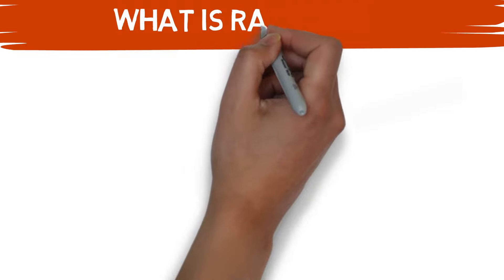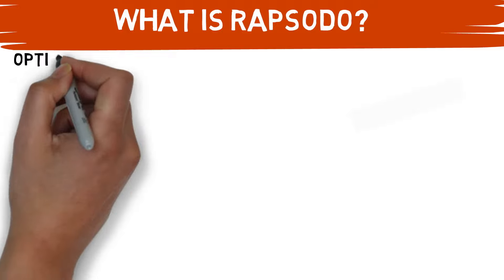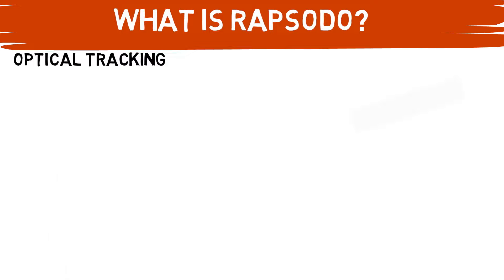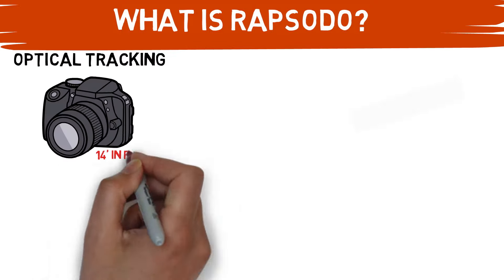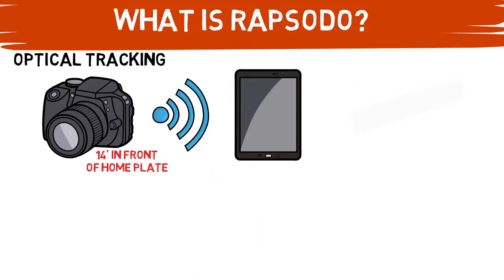So we've talked about Rapsodo a lot on this channel, but in case this is the first piece of information you've turned to after opening up the box to your new hitting Rapsodo, I'll start with the basics. What is Rapsodo? Well, it is an optical tracking unit, and the hitting unit sits 14 feet in front of home plate that transmits a wireless signal to an easy-to-read dashboard on their iPad app.